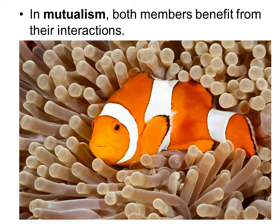We will discuss three types of symbiotic relationships. The first one is mutualism. In a mutualistic relationship, both members will benefit from their interaction. In this image we have a sea anemone and a clownfish — they are both benefiting from this interaction.